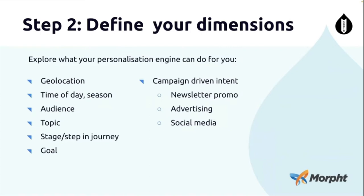Some of the dimensions we can program around personalizations are things like geolocation, the time of day and season, what type of audience you are and the topics you're interested in, the stage or step in your journey and the goal you're trying to achieve. We can get a bit more complicated with tracking toward your intent by tracking a link you've come through from external advertising or a newsletter and then showing you related information on the site.